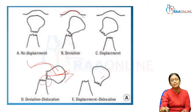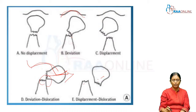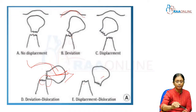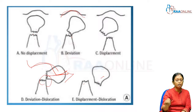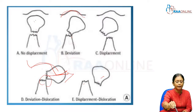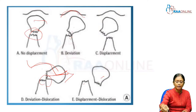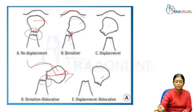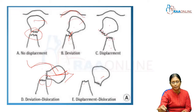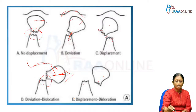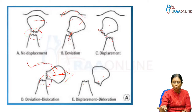To repeat: Type A — fracture in position, no displacement, head and fragments in continuity. Type B — in continuity but deviated. Type C — completely out of continuity with the fragment, so this is displacement. Type D — the complete head is out of the socket, dislocated. Type E — dislocated and displaced.